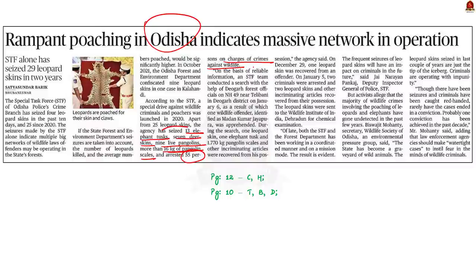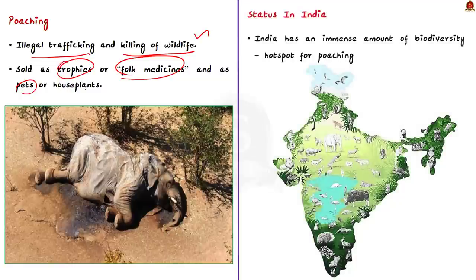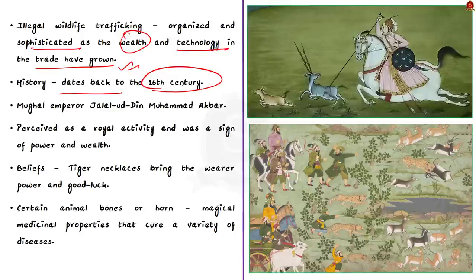Poaching is the illegal trafficking and killing of wildlife. Sometimes animal or plant parts are sold as trophies, folk medicines, pets, or house plants. India has an immense amount of biodiversity and as a result has become a hotspot for poaching. Illegal wildlife trafficking in India has become more organized and sophisticated as wealth and technology in the trade have increased. The history of large game poaching dates back to the 16th century, when Mughal Emperor Jalaluddin Mohammad Akbar fell in love with the sport, and the practice was perceived as a royal activity.